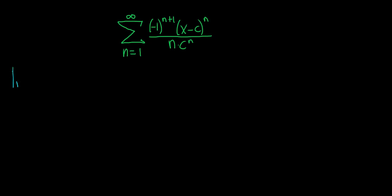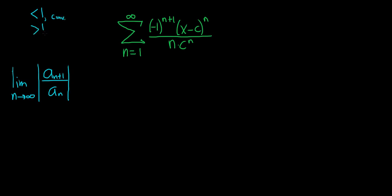The ratio test says that you take the limit as n goes to infinity of the absolute value of a sub n plus 1 over a sub n. The ratio test produces one of three outcomes: if the result is less than 1, we have convergence; if greater than 1, we have divergence; and if it equals 1, we unfortunately have no information. We're trying to find the set of all x for which the series converges — the interval of convergence — so we'll purposely set it less than 1.